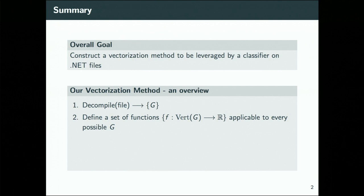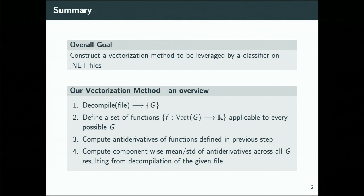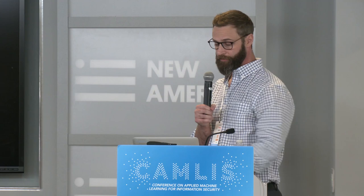These are hand-designed functions defined on the vertex sets of these directed graphs, mapping to the real numbers, and they're applicable to every possible graph coming out of decompilation. We then compute antiderivatives of these functions. Because we get many graphs — sometimes as many as 10^5 graphs per file — we need to combine these values, so we compute component-wise means and standard deviations of the antiderivative components across all graphs resulting from decompilation of a given file.